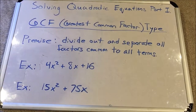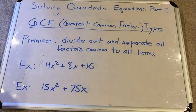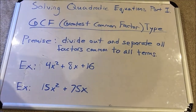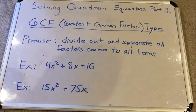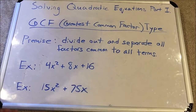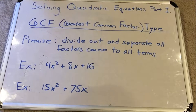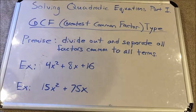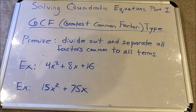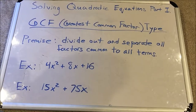The first type of factoring we're going to look at is called greatest common factor type factoring. The premise is that you're going to divide out and separate all factors common to all terms. That's what's meant by greatest — we get all of them out, the largest amount of factors that belong to all the terms involved. We divide those out and put them in front. This video assumes you have practice doing greatest common factoring with two or more terms.